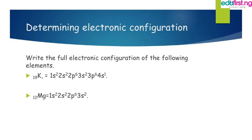Now let's see how to write electronic configurations. For potassium with atomic number 19: 1s takes 2 (17 left), 2s takes 2 (15 left), 2p takes 6 (9 left), 3s takes 2 (7 left), 3p takes 6 (1 left), and the last electron goes to 4s. So potassium is 1s2, 2s2, 2p6, 3s2, 3p6, 4s1. For magnesium with atomic number 12: 1s2, 2s2, 2p6, 3s2.